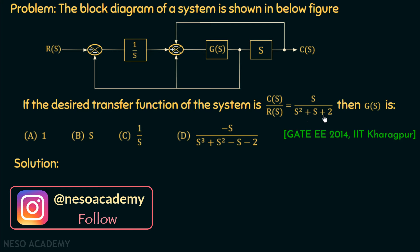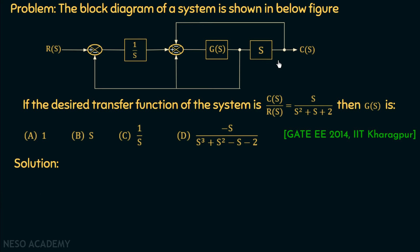Using this transfer function, we need to find the value of G(s). Firstly, using this block diagram representation, we will find the overall transfer function in the form of G(s), and then compare it with the given transfer function. Moreover, in this problem, it is not necessary to use only block diagram reduction. We will solve this problem by two methods: method 1 will be block diagram reduction and method 2 will be the shortcut method.